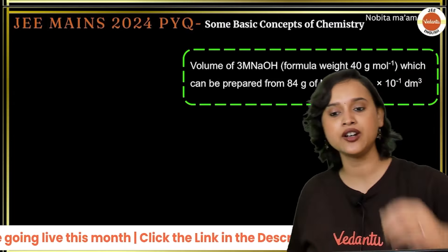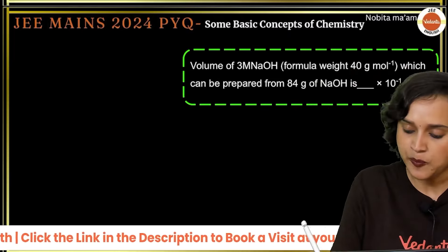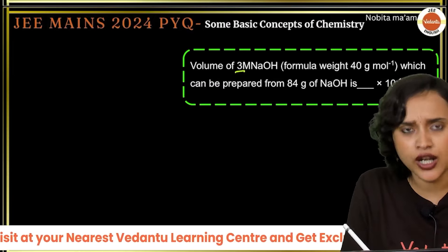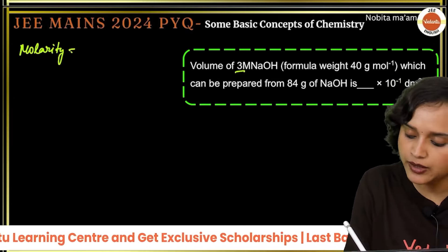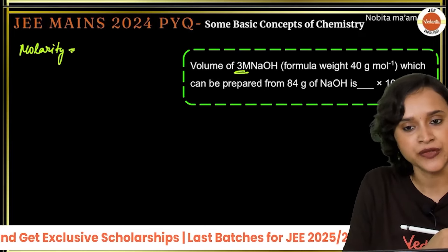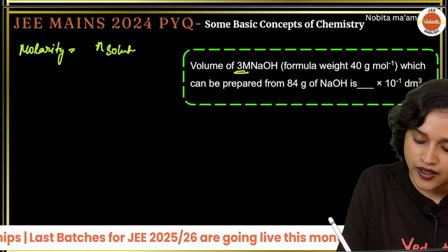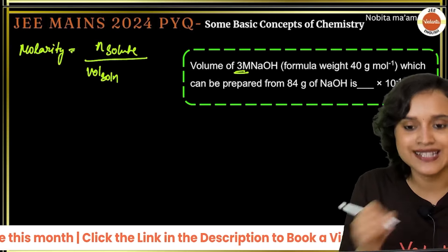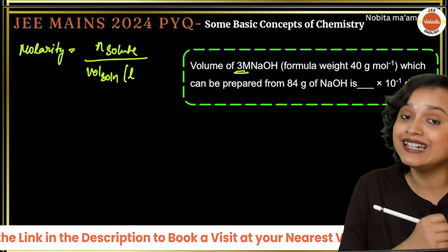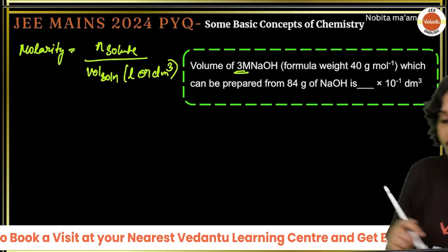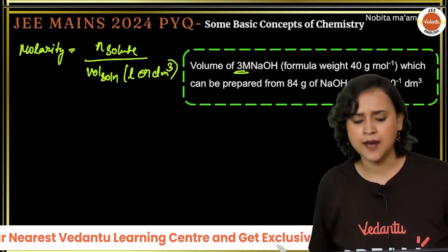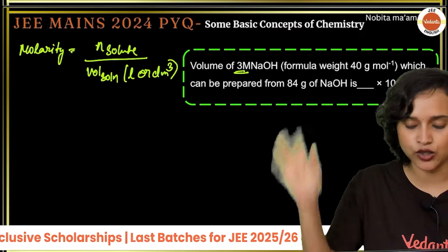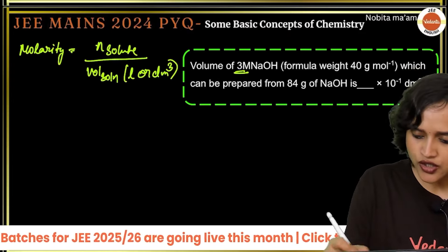Molarity = number of moles of solute divided by volume of solution in liters (or dm³, since 1 L = 1 dm³). We know molarity = 3 M. We can also write this as: molarity = (weight of NaOH / molar mass of NaOH) × (1/V).